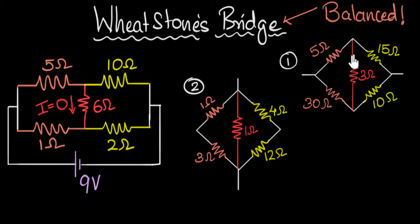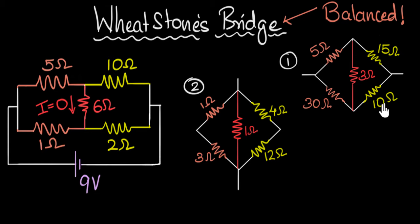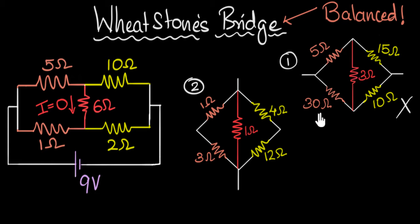Let's look at the first one. This is a Wheatstone's network, just arranged a little differently — this is usually how it's shown. Let's see if it's balanced. This is in the ratio one is to three, and this is in the ratio three is to one. So this is not a balanced network, meaning current will flow. If this was 10 and this was 30, then it would be balanced.